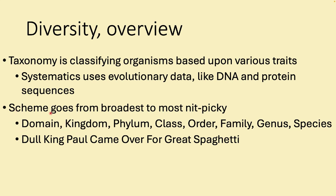Domain is the most broad category with the fewest defining characteristics, while species is the most specific with the most requirements. A mnemonic to remember the order: 'Dull King Paul Came Over For Great Spaghetti' — domain, kingdom, phylum, class, order, family, genus, species.